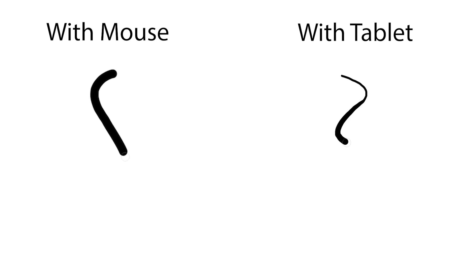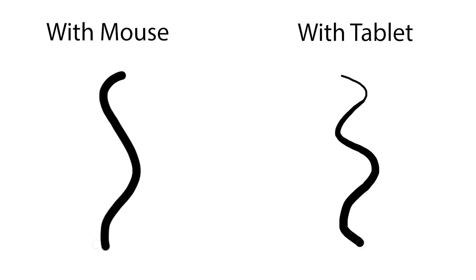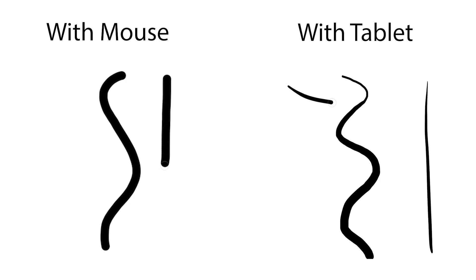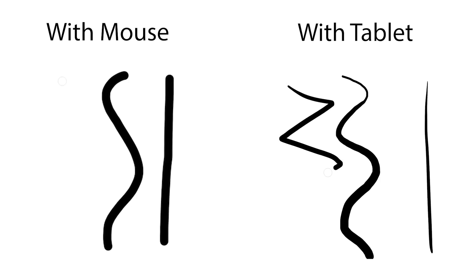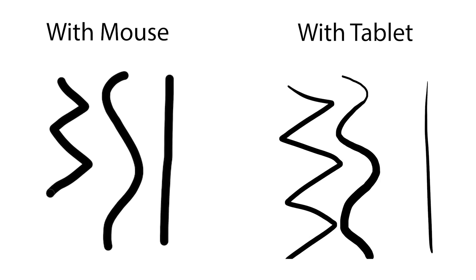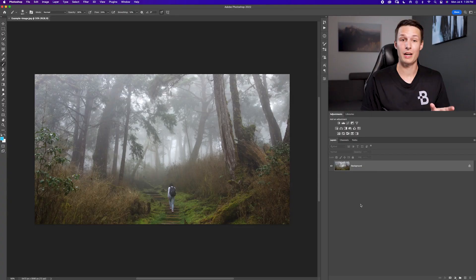An editing tablet makes it a little bit easier to make those fine-tuned adjustments when you're painting lighting effects. However, you can still do this with a mouse — so if you don't have an editing tablet, don't feel discouraged. You can still edit your photo just like the one we're going to create here. Once you have this photo downloaded, we're going to open it into Photoshop.